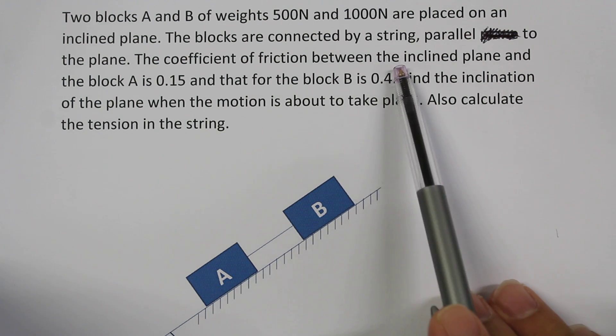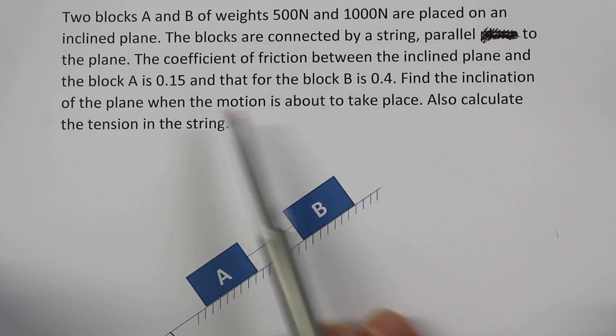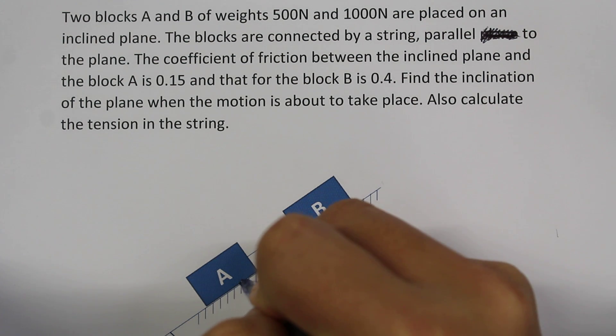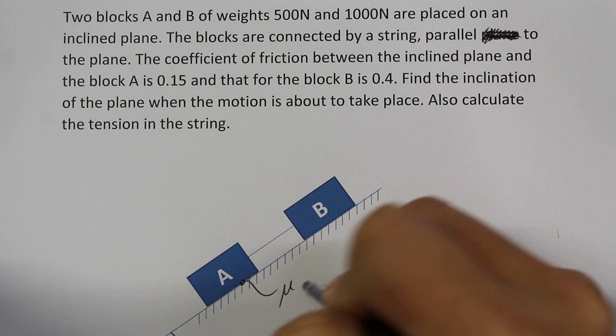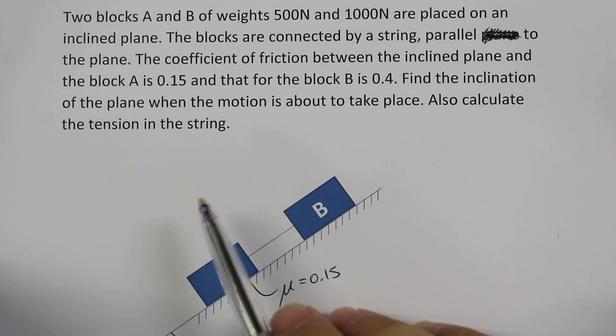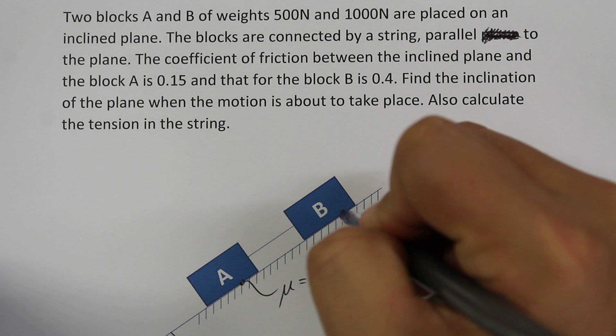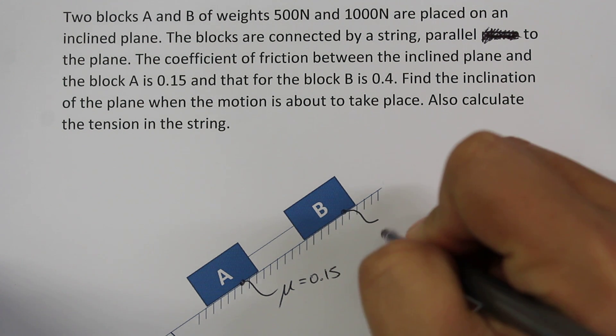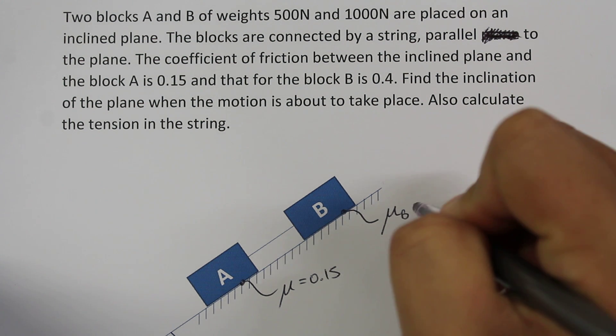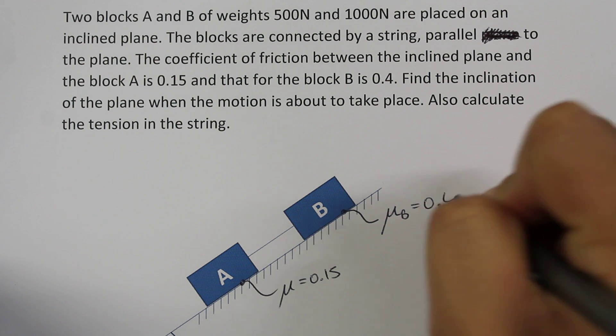The coefficient of friction between the inclined plane and block A is 0.15, so we have 0.15. And for B, the coefficient of friction between the two surfaces is 0.4, so mu for that surface is equal to 0.4.